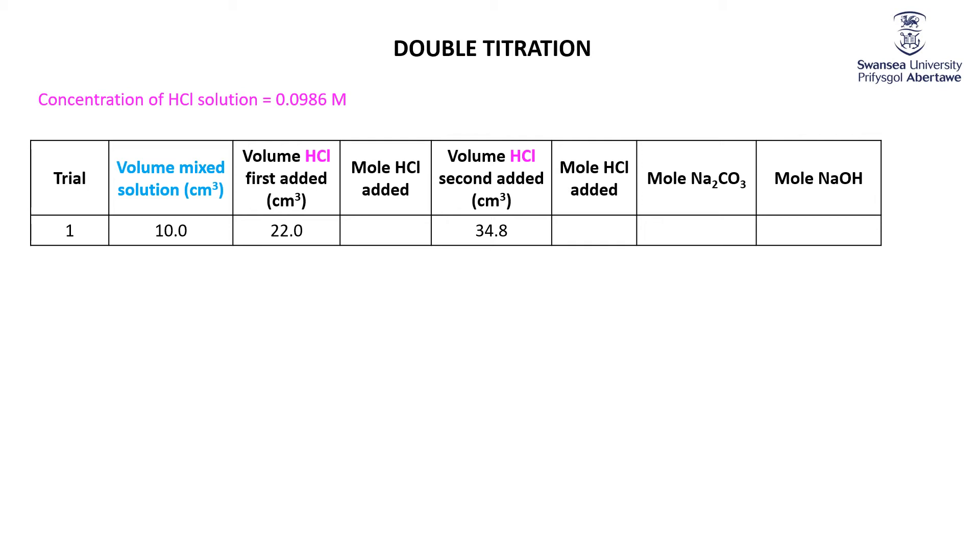So it's always worth doing a worked calculation. This is how I would do it. Hopefully it will match up to how your teachers would want you to do it. So here are our data. That's the concentration of the HCl, 0.0986 moles per cubic decimetre.